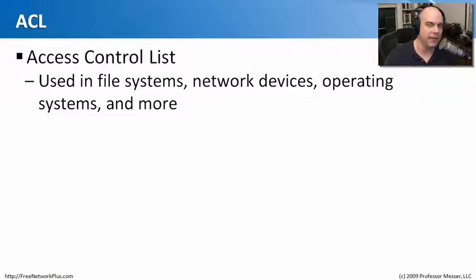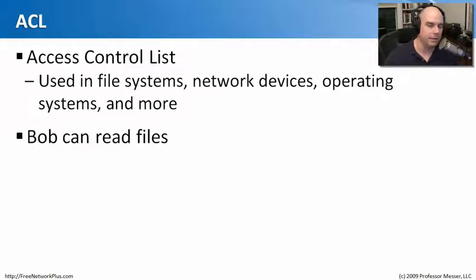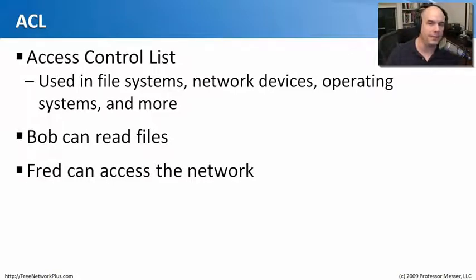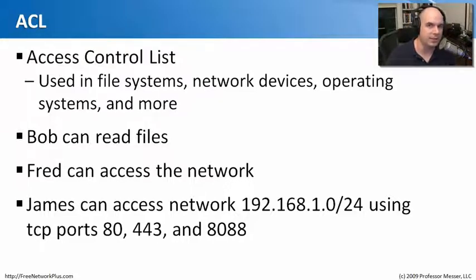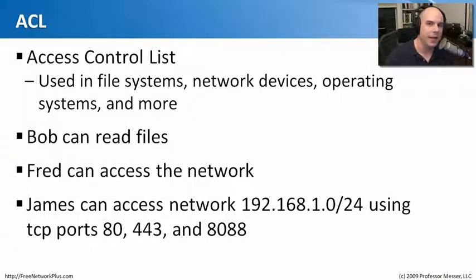An ACL creates a list that provides access, and that list is dependent on the platform it runs upon. On a file platform, an ACL might say Bob has the ability to read files. Fred can access the network — that's something we might see in a network device. A firewall ACL might specify that James can access network 192.168.1.0/24 and only use ports 8443 and 8088. These access control lists appear in firewalls, routers, switches, and other network devices.